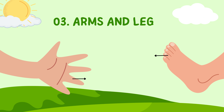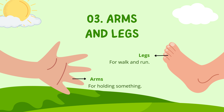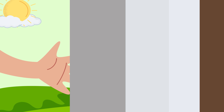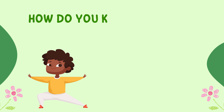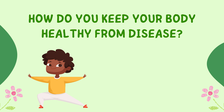Number 3: Arms and Legs. Legs for walking and running. Arms for holding something. How do you keep your body healthy from disease?